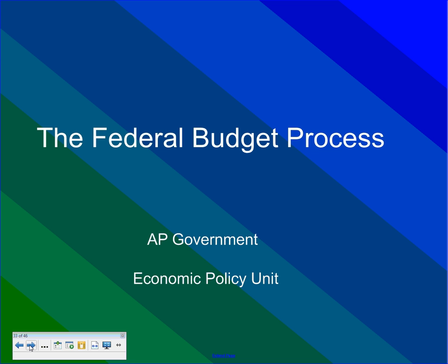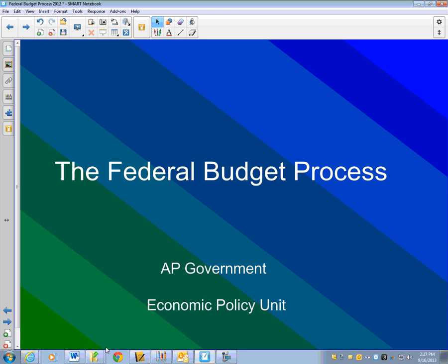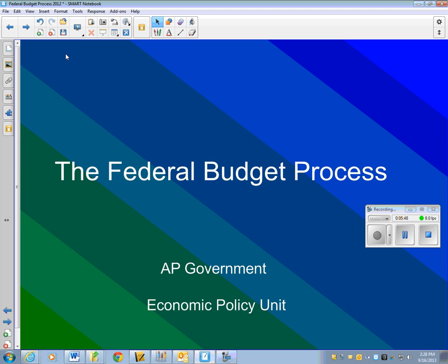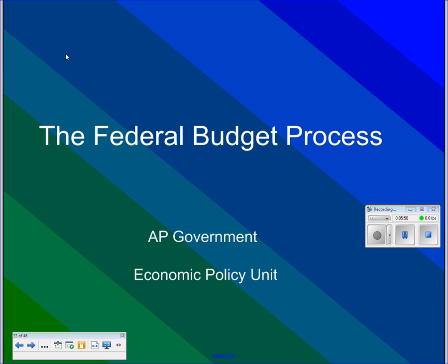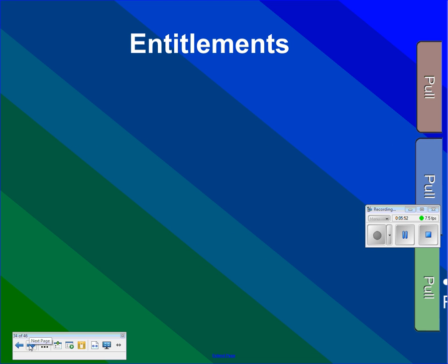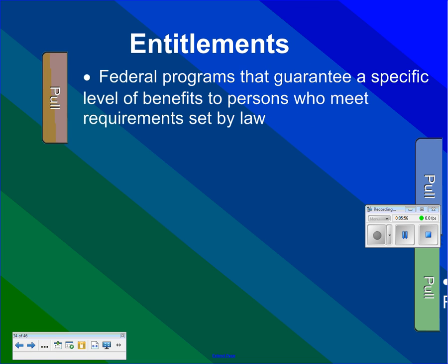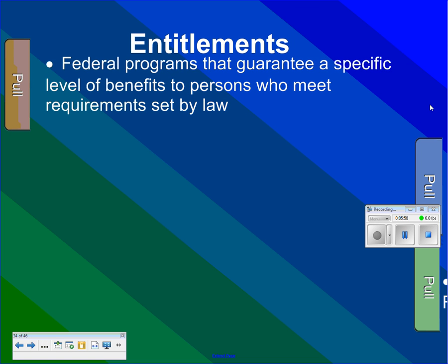Here's how the federal budget process plays out. We have entitlements — social security, Medicare, and so on. An entitlement is a federal program that guarantees a specific level of benefits to persons who meet requirements set by law.